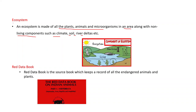Red Data Book: the Red Data Book is the source book which keeps a record of all endangered animals and plants. It is maintained by India and also at the world level. The Indian Red Data Book on animals, Part 1 — Vertebrates — records Mammalia, Aves, Reptilia, and Amphibia.